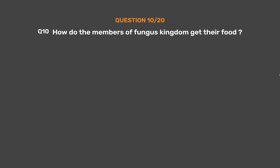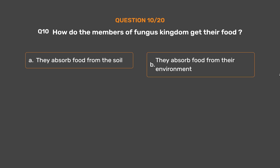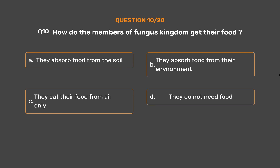Question number 10. How do the members of the Fungus Kingdom get their food? Option A: They absorb food from the soil. Option B: They absorb food from their environment. Option C: They eat their food from air only. Option D: They do not need food.